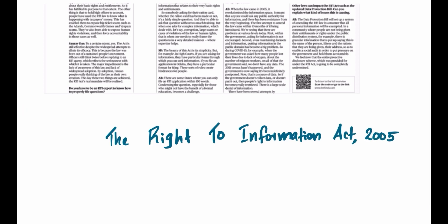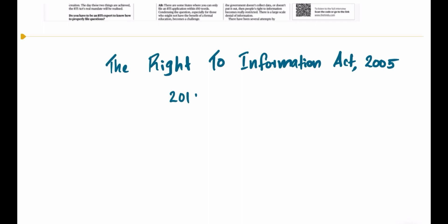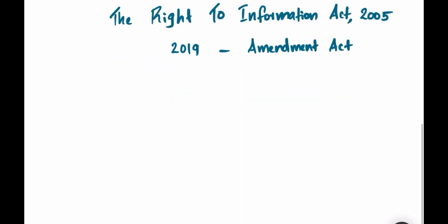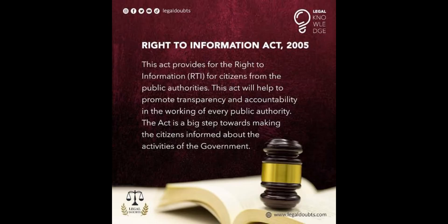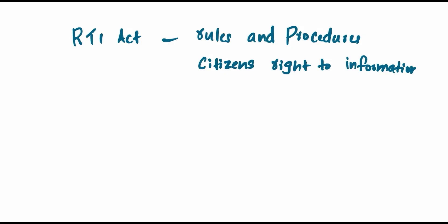The main objective of the act is to promote transparency and accountability in the working of public authorities or governmental authorities. Hence, the act contains various rules and procedures relating to the citizens' right to information. Under the provisions of this act, any citizen may require information from any public authority, and the public authority has to make a reply within 30 days.